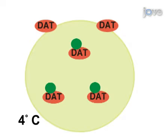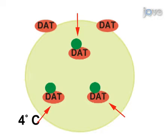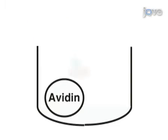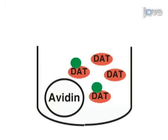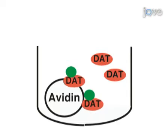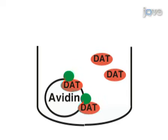Thus, the only biotinylated proteins that remain are those that originated at the cell surface, were internalized, and protected from the stripping procedure. Finally, cells are solubilized and biotinylated proteins are isolated by streptavidin affinity chromatography.